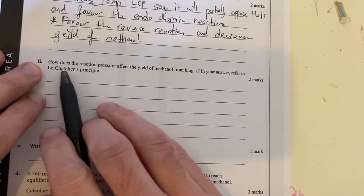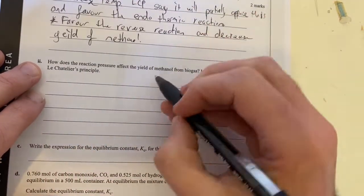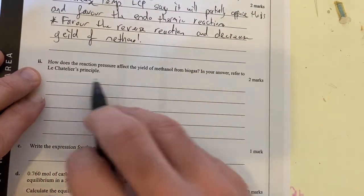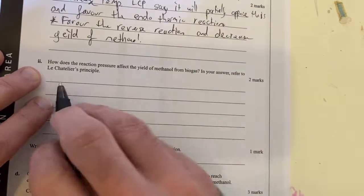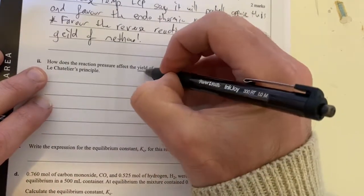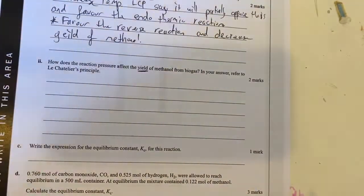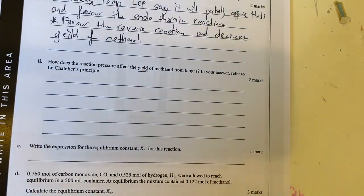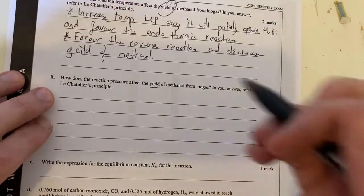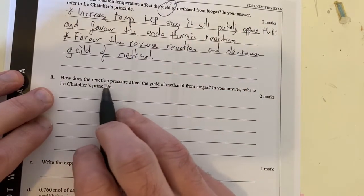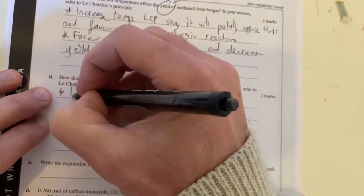Now, let's have a look at what the next one is. How does the reaction pressure affect the yield of methanol? Again, referring to Le Chatelier's principle, even if it didn't say refer to Le Chatelier's principle, because I know it's yield, I know I'm going to be talking about equilibrium shift and Le Chatelier's principle based on that. So let's again take a side. If we want to talk about reaction pressure, I'll say what happens if we increase pressure.